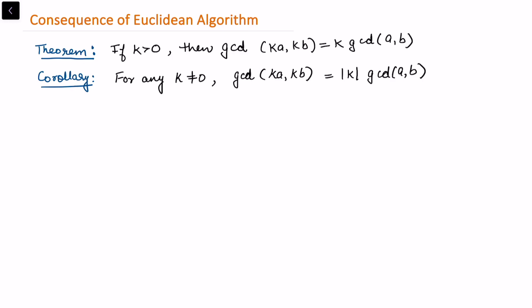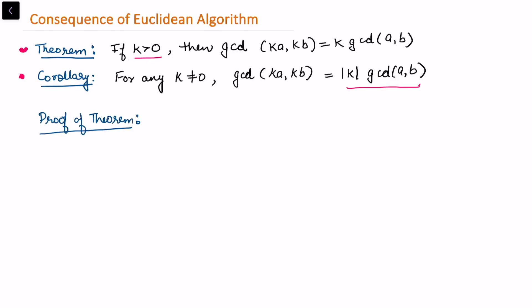In this video I will be giving a consequence of the Euclidean algorithm as this theorem, which says that if k is strictly positive, then gcd(ka, kb) is equal to k times gcd(a, b). As a corollary, for any k not equal to 0, gcd(ka, kb) is equal to the absolute value of k multiplied by gcd(a, b). Let us first prove the theorem, and from there we can derive the reasoning for the corollary.